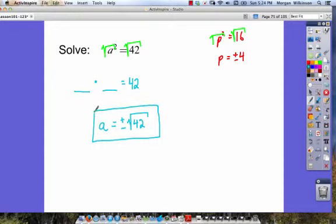This problem is actually more simple than the last problem we had. Because in the last problem we had to simplify the square root of 16 to get 4 since it's a perfect square. Since the square root of 42 is not a perfect square, we just leave it as this plus or minus the square root of that number.